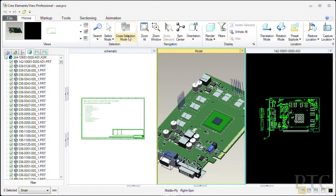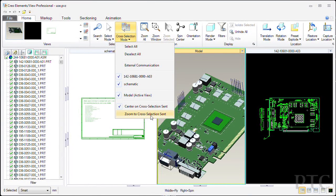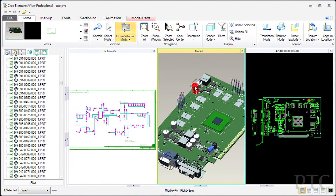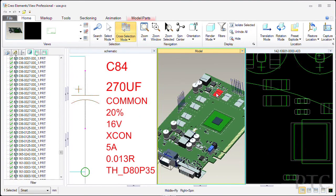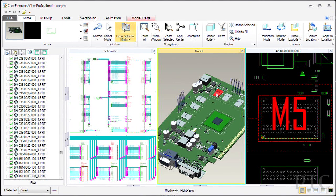For example, Creo Elements View now provides ECAD visualization capabilities supporting electrical printed circuit boards, schematics and associated metadata, deeply integrated into the high-performance Elements View architecture and user experience.